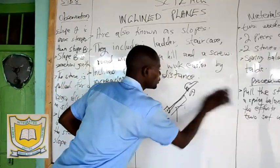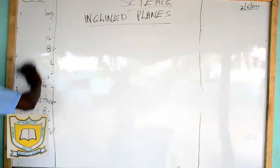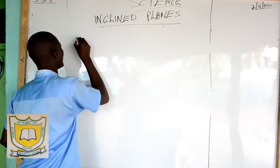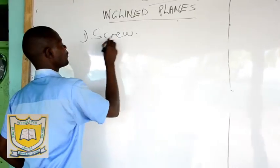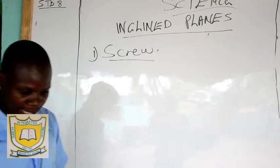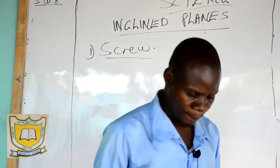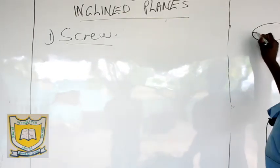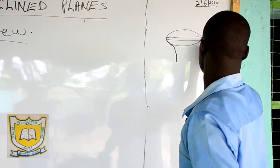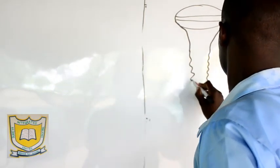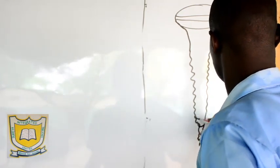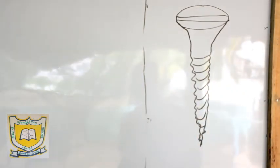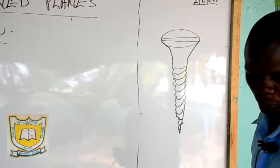That activity shows that when the effort distance is longer, the effort used will be less; but when the effort distance is short, the effort used is more. Now let us move to the first type of inclined plane — the screw. What is a screw? The screw — I will draw it here. The pattern around the screw is called the threads.